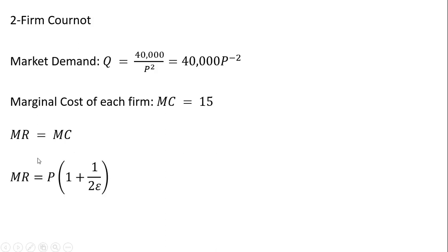And the key thing for this solution is that marginal revenue can be given by this expression, where this E over here is the price elasticity of demand, and 2 represents the number of firms in the Cournot model. So if we had 3 firms or 4 firms, I'd just put in the respective value for the number of firms right here.